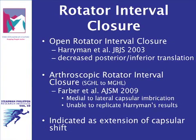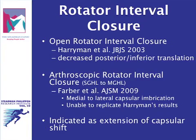Arthroscopic and open procedures have been described to imbricate rotator interval tissues. The results of open coracohumeral imbrication by Harriman and colleagues are often extrapolated to arthroscopic closures despite fundamental differences in the interval closure technique, resulting in an interesting controversy regarding the true function of, and indication for, a rotator interval closure.